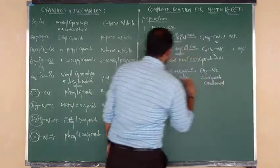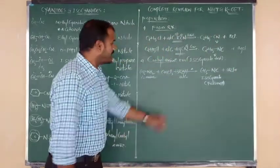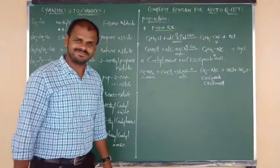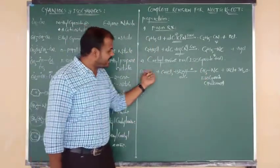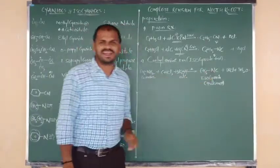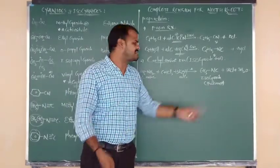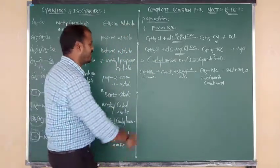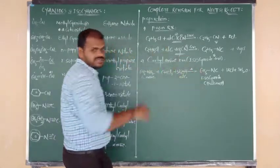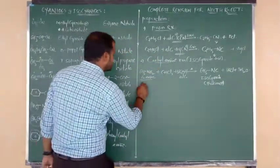Three moles of K+ combine with 3 Cl- to eliminate 3 moles of KCl, and the remaining oxygen gives 3 moles of H2O. So methylamine gives methyl isocyanide with a foul smell. Ethylamine gives ethyl isocyanide, phenylamine (aniline) gives phenyl isocyanide — both aliphatic and aromatic primary amines undergo this reaction.